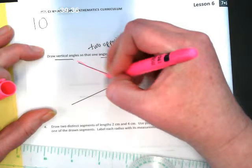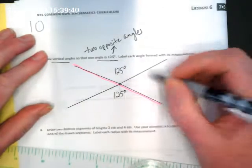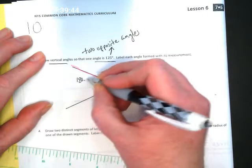The other way I could have done that is just laid my ruler down on that line and continued the angle. So this is 125 degrees, and this is 125 degrees.